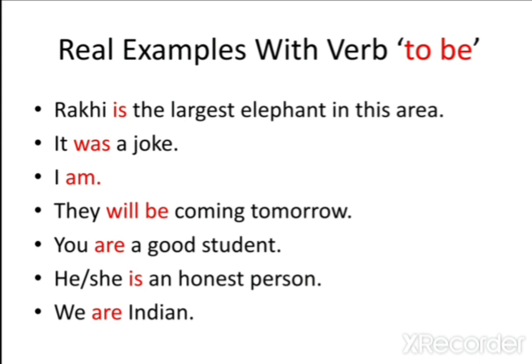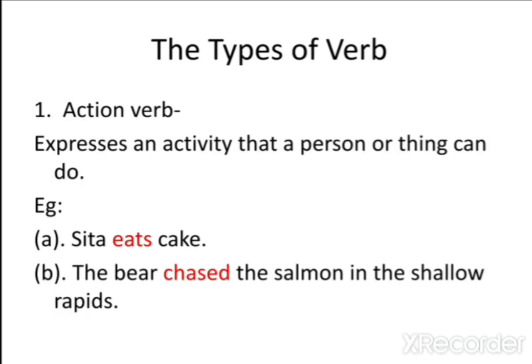Keep in mind that 'I am' is the shortest sentence in English. 'You are a good student' — 'are' is a verb form. 'He/She is an honest person' — 'is' is a verb form from the verb 'to be'. 'We are' — 'are' is a verb form from the verb 'to be'.